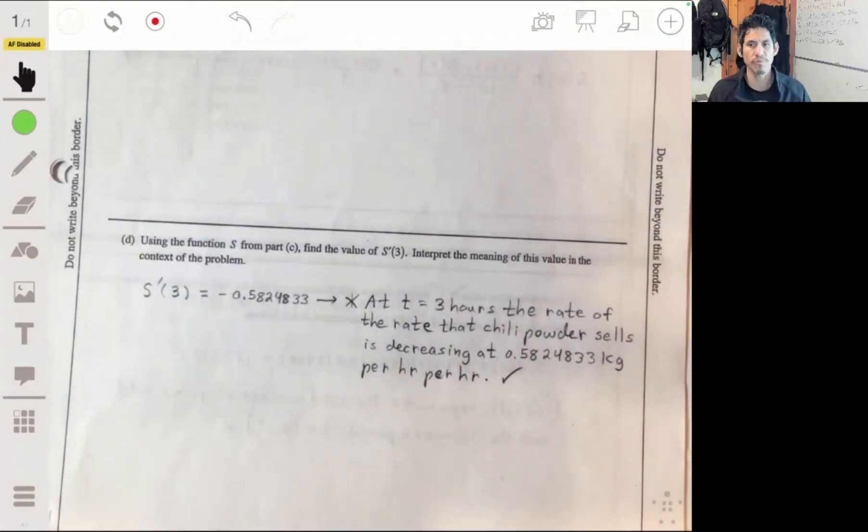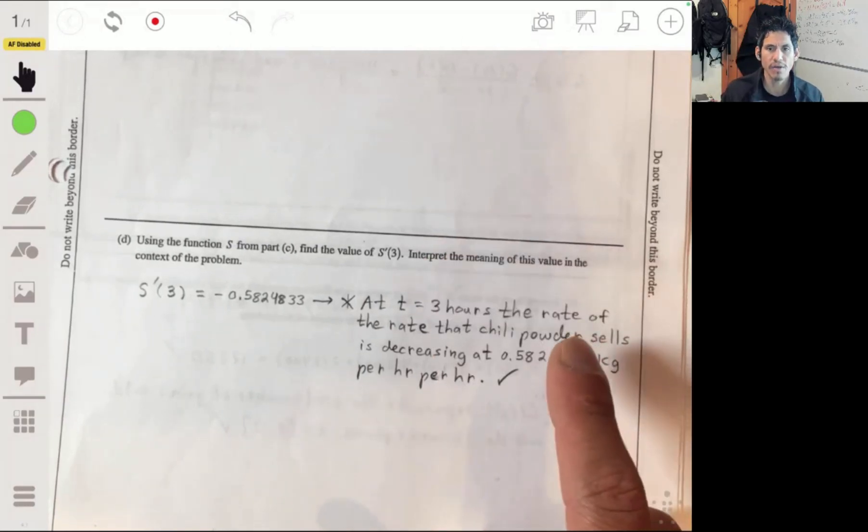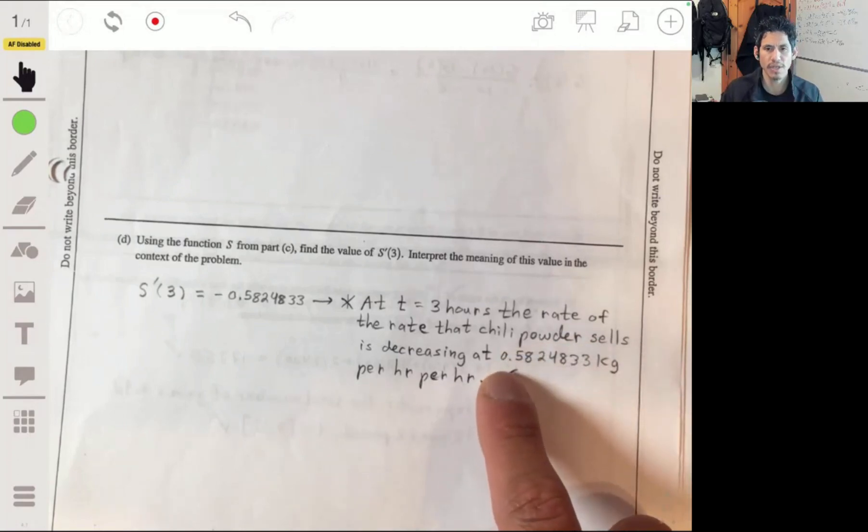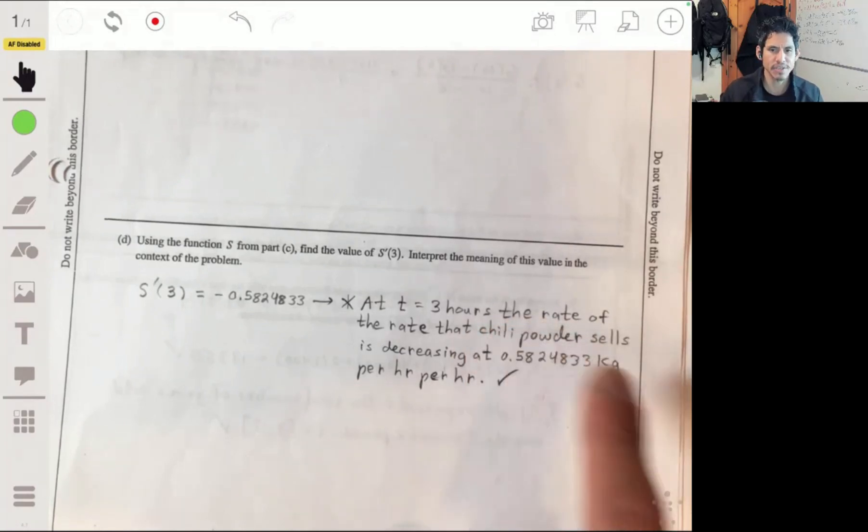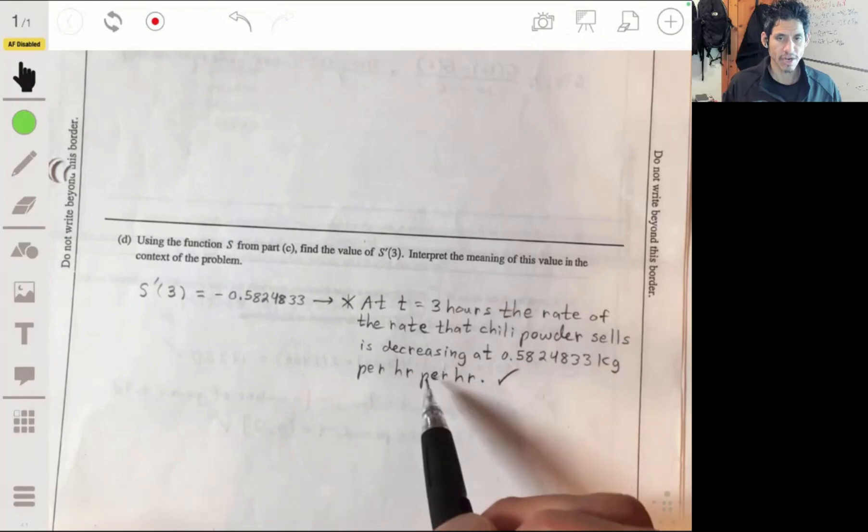Think of it as speed versus acceleration. Speed is your rate, how fast you're moving, but acceleration is the rate of change of your rate of change, or basically how fast your velocity, your speed is changing. We say at three hours, because we're evaluating at three, the rate that chili powder sells is decreasing. The rate that chili powder sells is decreasing at 0.5824833 kilograms per hour per hour.